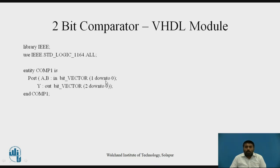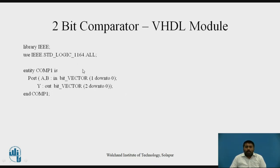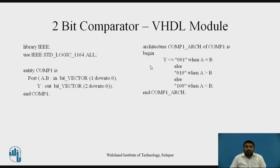Instead of 1 down to 0, you can also write 1 to 2 — either way works. We also have the output for the 2-bit comparator, which is 3 bits, so Y is declared as an out bit_vector type with range 2 down to 0, giving you bits 2, 1, and 0. Once we are done with the entity declaration, the third important part is writing the architecture.